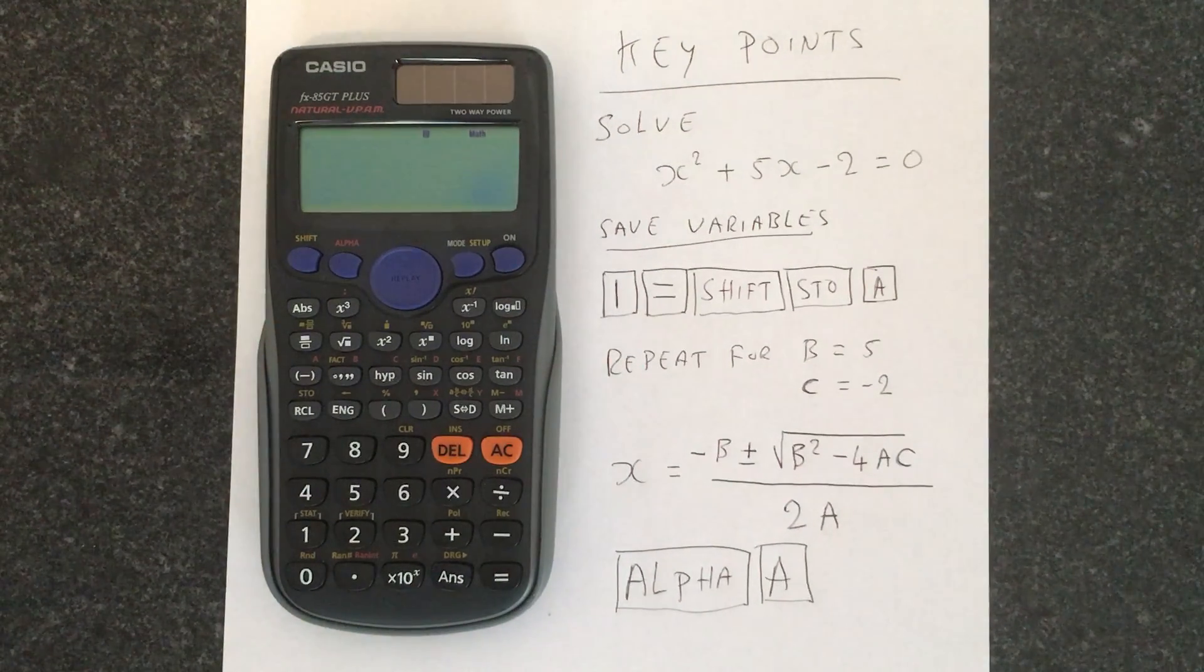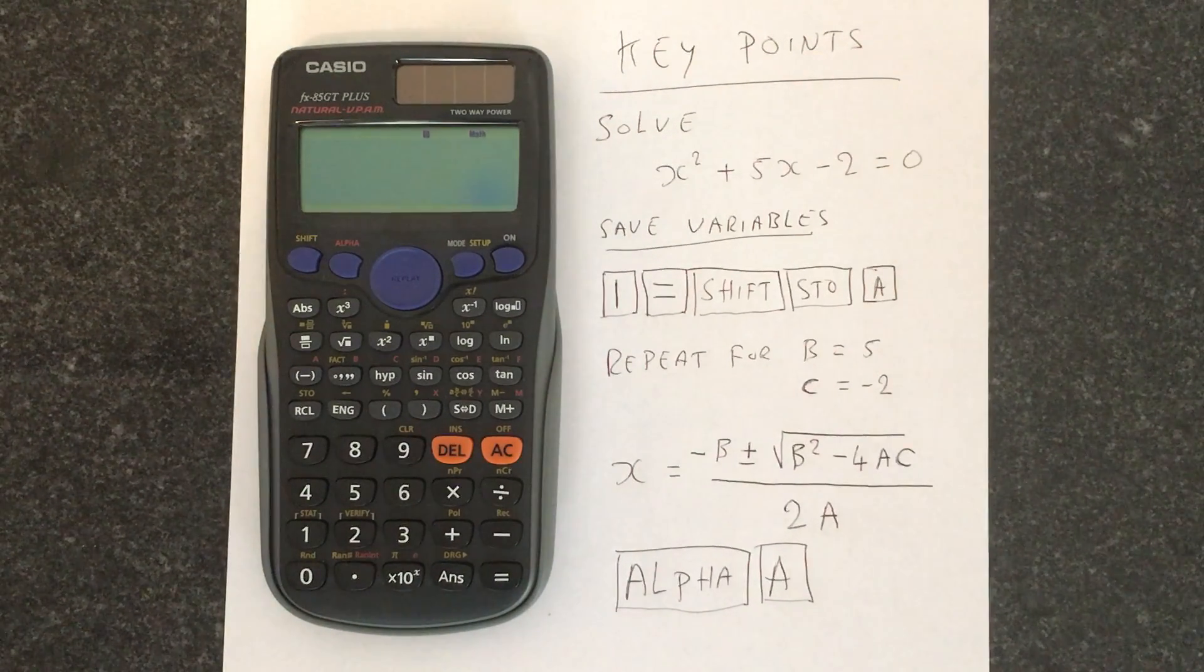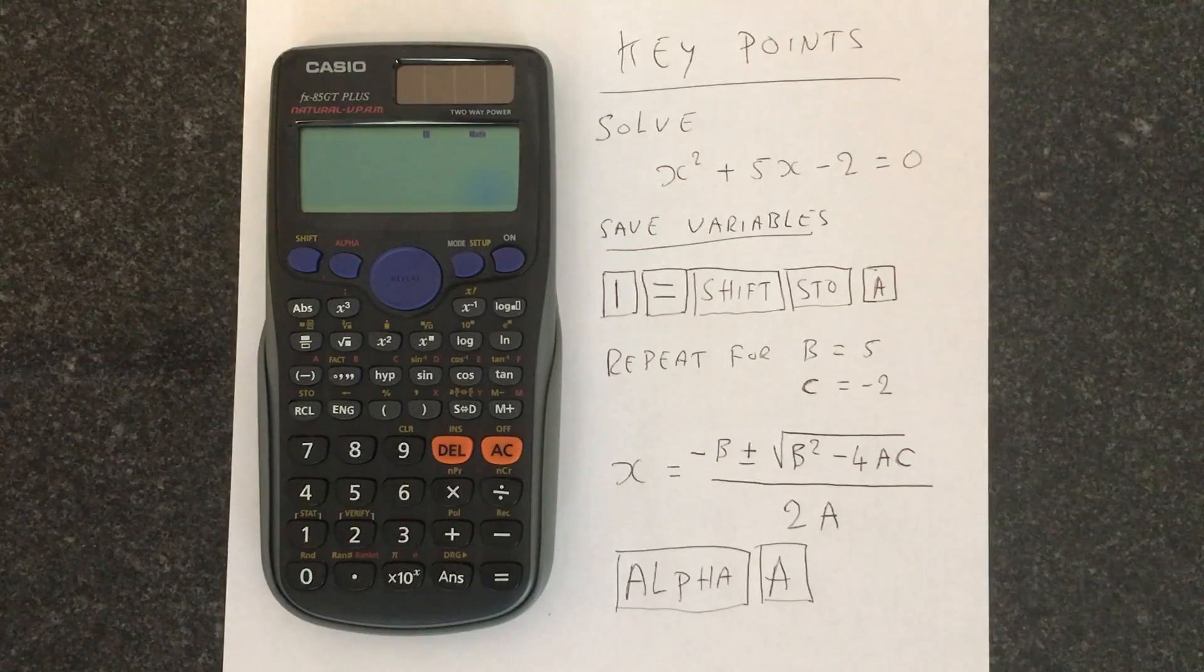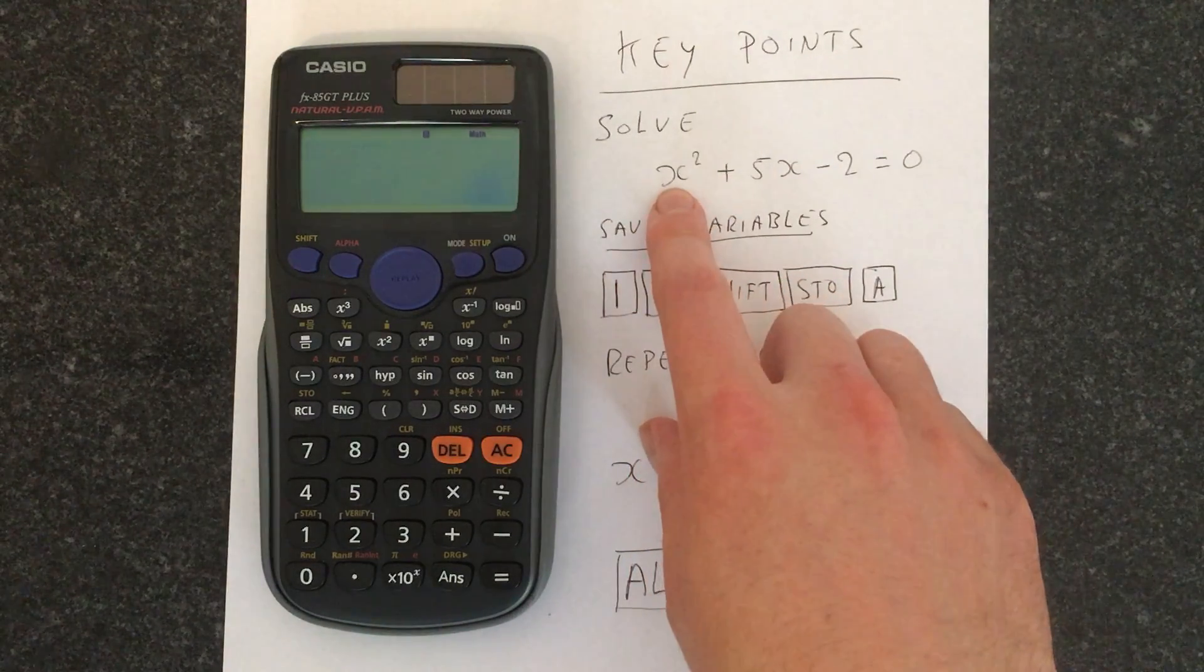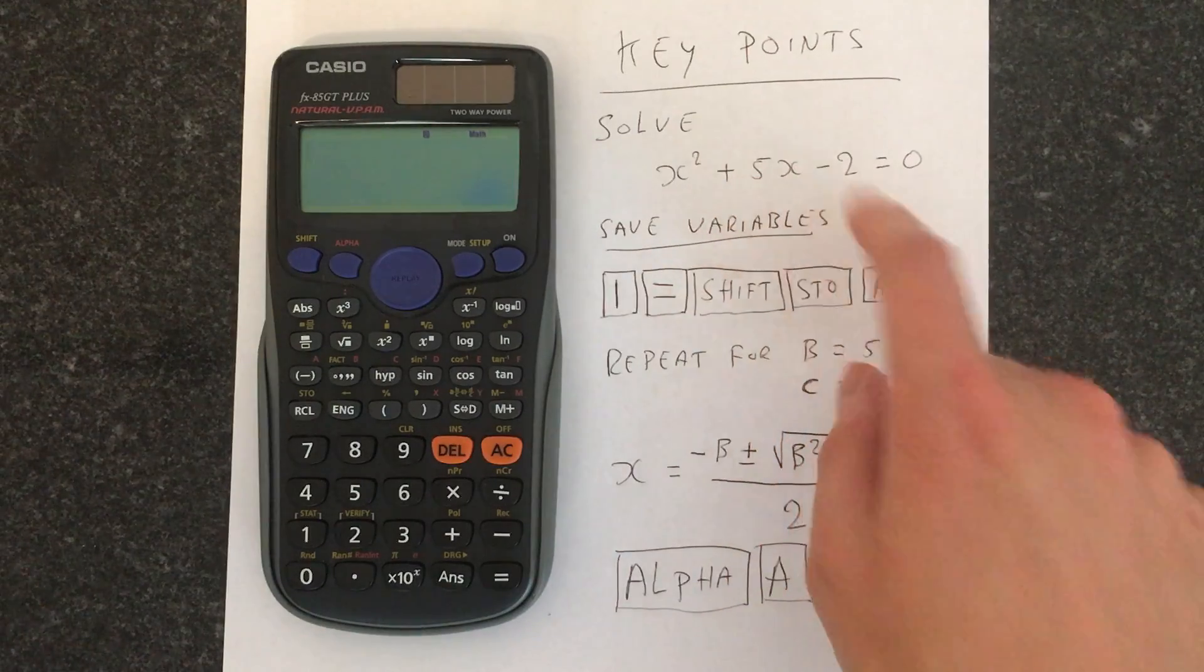In this video I'm going to teach you how to solve quadratic equations using a Casio FX85GT+. To do this we're going to do a worked example. So we've got x squared plus 5x minus 2 equals 0.